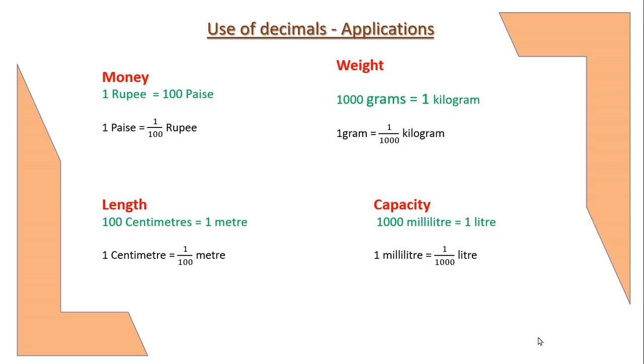Capacity: 1000 milliliter is equals to 1 liter. 1 milliliter is equals to 1/1000 liter. These are the few units to remember to solve the further problems. Let's take some application